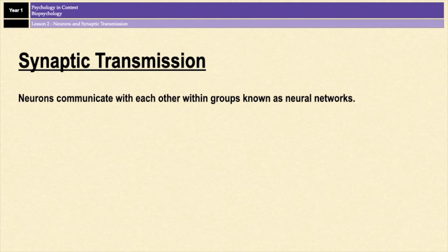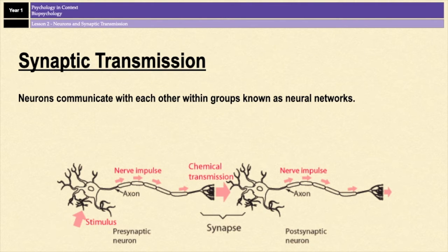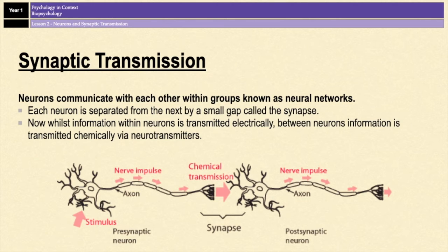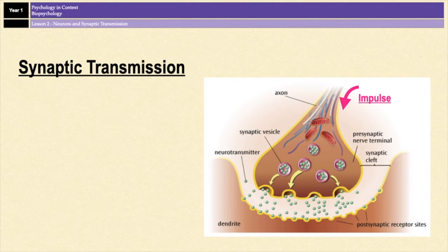Neurons communicate with each other within groups known as neural networks. Effectively, every neuron makes up a link in a chain, and each neuron is separated from the next by a small gap called the synapse. Between neurons, information is transmitted chemically via neurotransmitters, and it's this chemical transmission that we're now going to look at. It is known as synaptic transmission because the information is transmitted across the synapse — the gap between two neurons.